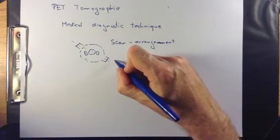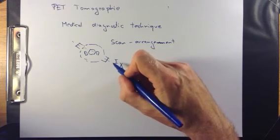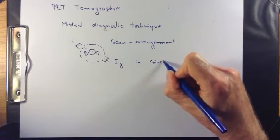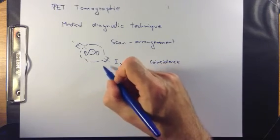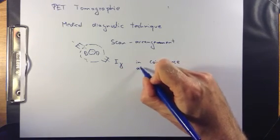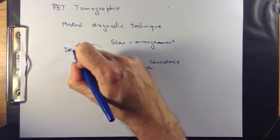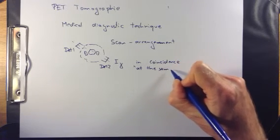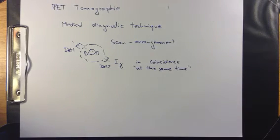And what is measured is the intensity of gamma-rays in coincidence, that means gamma-rays that are detected at the same time in both detectors. Detector 1 and detector 2.